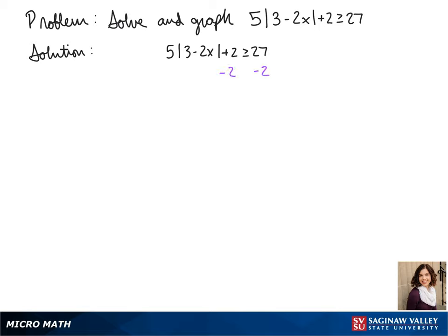Our first step is to get the absolute value by itself on the left side. So we subtract 2. Our next step is to divide both sides by 5. So we get the absolute value of 3 minus 2x is greater than or equal to 5.